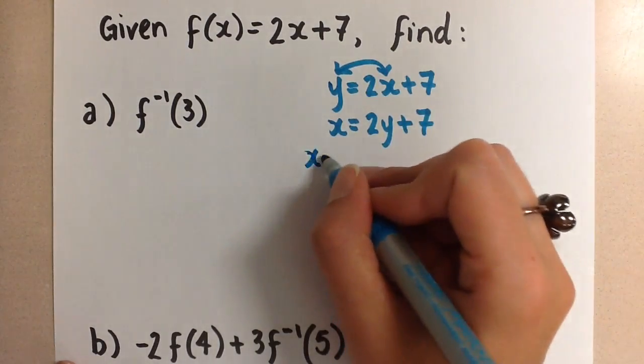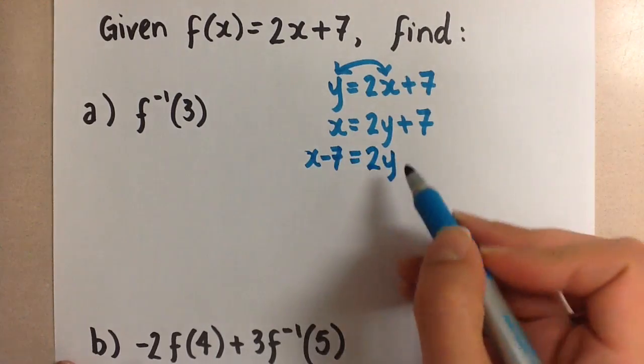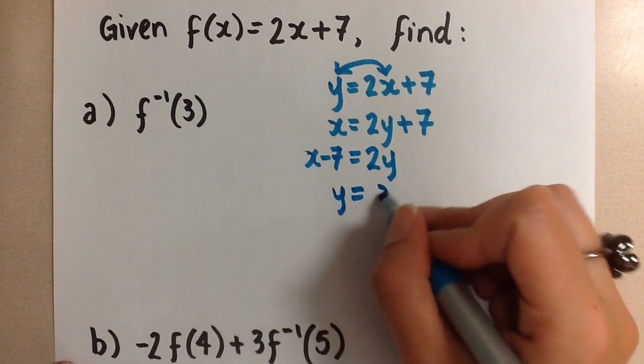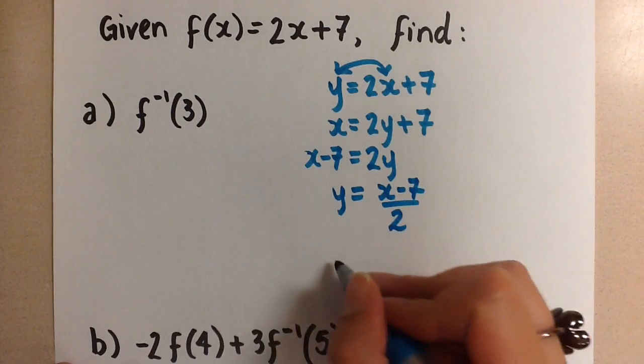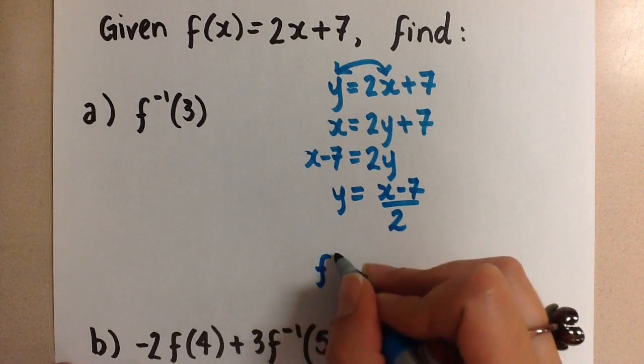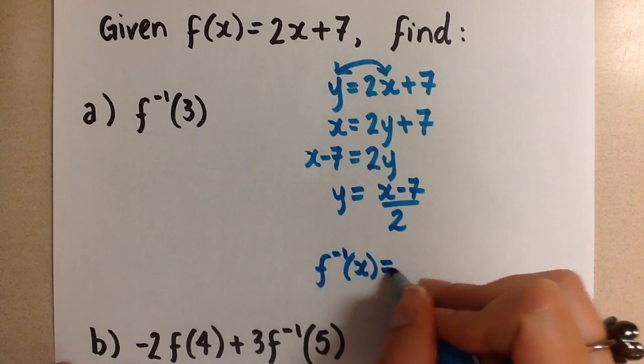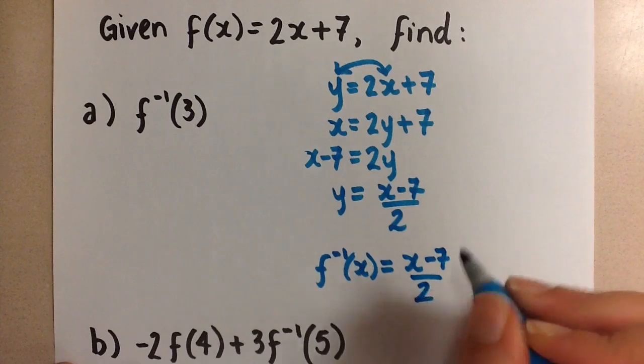So we'll have x minus 7 on the left and 2y on the right. Now we divide by 2 on both sides. This will give us y equals x minus 7 over 2. And make sure that we use the proper notation. This is now the inverse of f(x). And we have this new equation for our inverse.